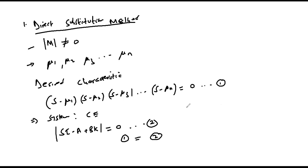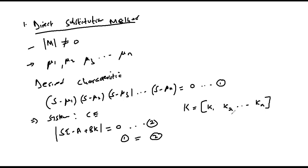Depending on the order of the system, our K will be defined as [K₁  K₂ ... Kₙ]. Through this we can solve for K by comparing the characteristic equation of the system based on the pole locations and the designed controller.